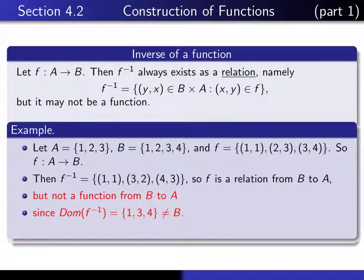The problem is that the domain of this relation is 1, 3, 4, which isn't all of B. So it's not a function from B to A because the domain isn't B. A fancier way of expressing that is to say that f is not an onto function.